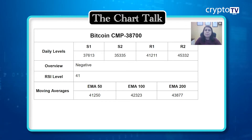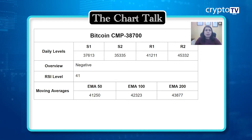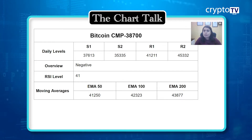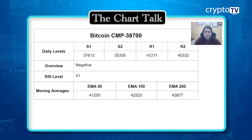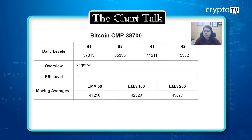Since the price is again and again falling to the downside, the negative overview is there. Yesterday the price fell by three percent, and that's the reason the RSI is also coming downward. Yesterday the RSI was trading at 44, but since the price fell three percent, the RSI is also moving to the 41 level. Looking at the moving averages: the 50 EMA is at $41,250, the 100 EMA is at $42,323, and the 200 EMA is at $43,877.